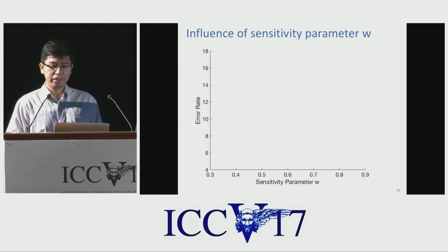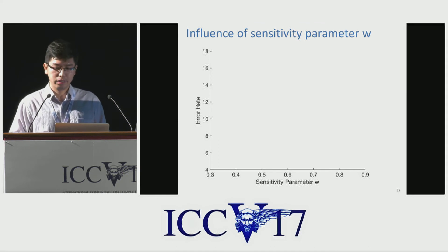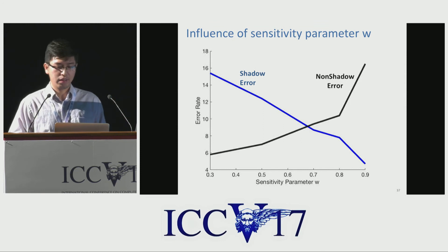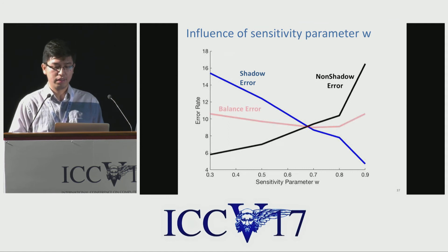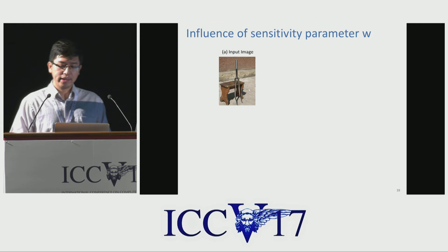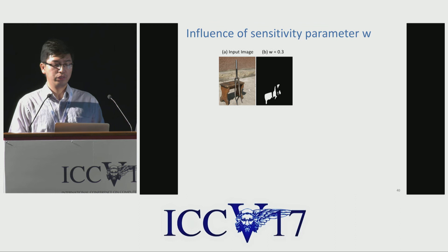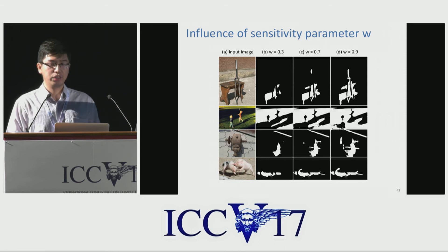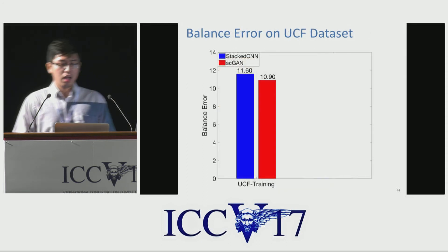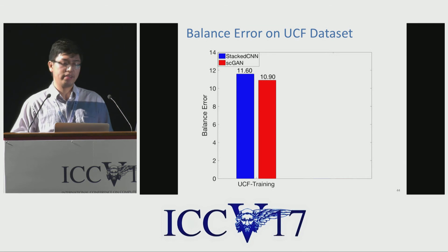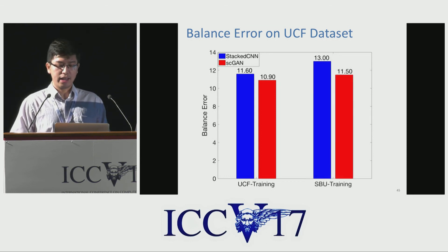We also conduct experiments with different W values to observe the impact of the parameter W on the predicted shadow region. As expected, when W increases, the shadow error decreases. In the meantime, the non-shadow error increases. And W = 0.7 is the minimum balanced error here. Looking at qualitative results with W equals 0.3, 0.7, and 0.9, we can see that when W increases, we have larger and larger shadow regions detected. Similarly, on the UCF dataset, which is a smaller dataset with around 100 training samples, we have similar results — our method achieves better performance than STACCNN when both models are trained on the UCF training set and on the SBU training set.